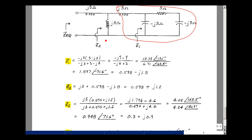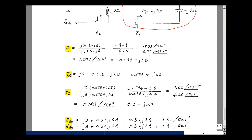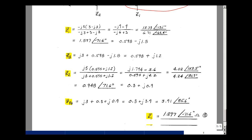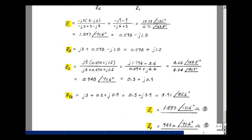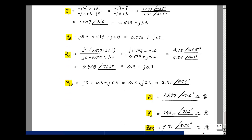Now all of that is in series with j3, so I put this into rectangular form — two in, two out from the calculator — giving 0.3 plus j0.9. Since we're close to 90 degrees it's much longer than the real part, so that seems reasonable. Adding j3 gives an overall value of 0.3 plus j3.9. Putting that into polar form: the magnitude is a little bigger than 3.9, which is 3.91. The angle is close to 90 degrees but is 85.6 degrees. The values for Z1, Z2, and Z-equivalent are shown below.